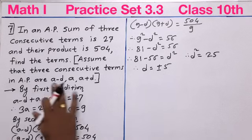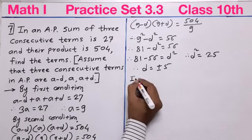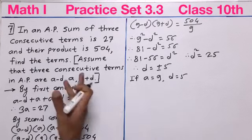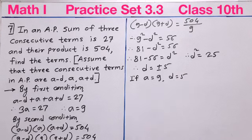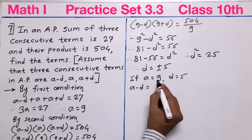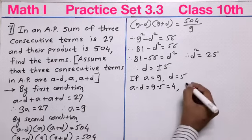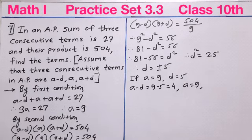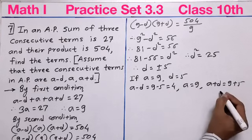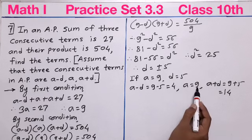First, let us find the three consecutive terms using A = 9 and D = positive 5. The first term is A minus D = 9 minus 5 = 4. The second term is A = 9. The third term is A plus D = 9 plus 5 = 14. So the three consecutive terms are 4, 9, and 14.